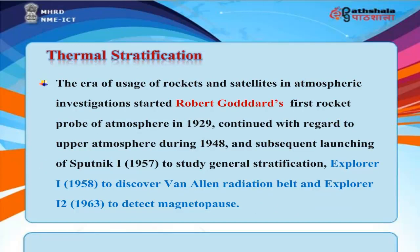The era of usage of rockets and satellites in atmospheric investigations started with Robert Goddard's first rocket probe of the atmosphere in 1929, continued with regard to the upper atmosphere during 1948, and the subsequent launching of Sputnik 1 in 1957 to study general stratification. Explorer 1 in 1958 discovered the Van Allen radiation belt, and Explorer 12 in 1963 detected the magnetopause.